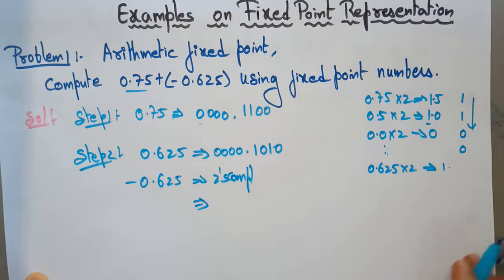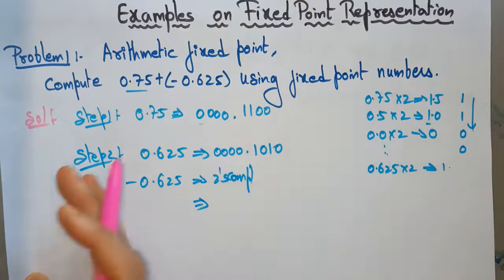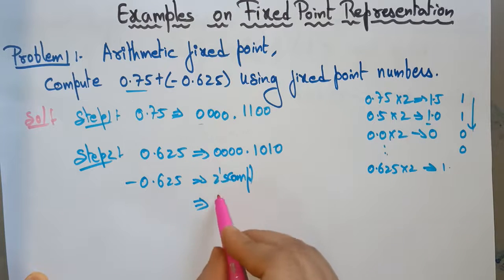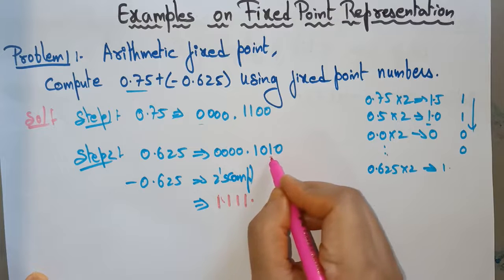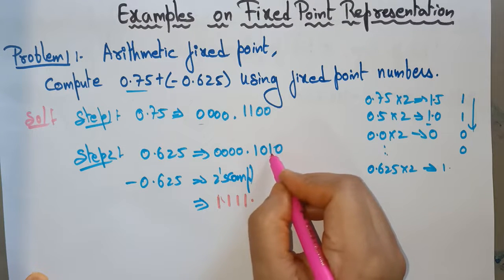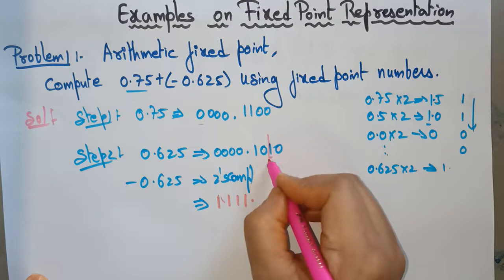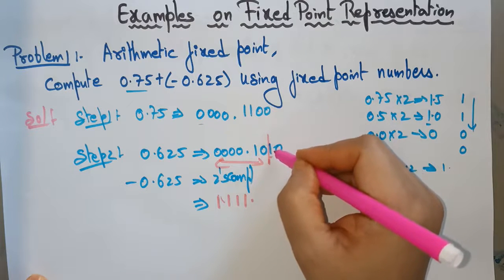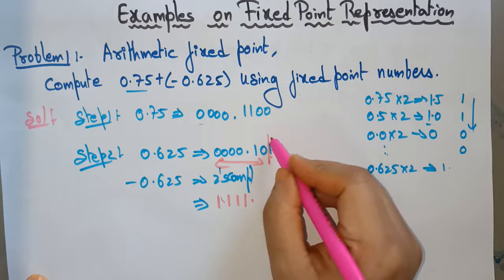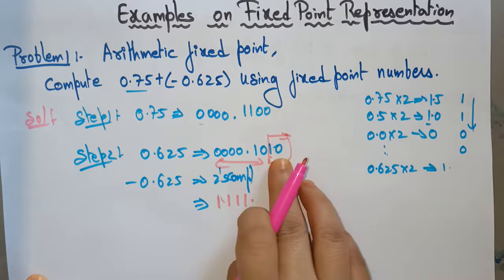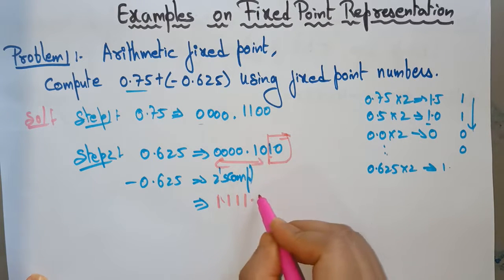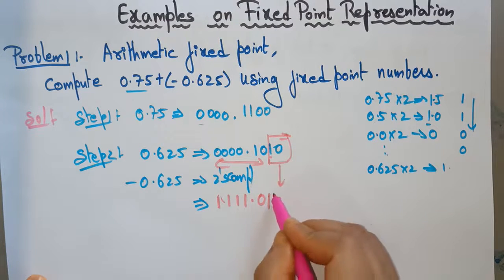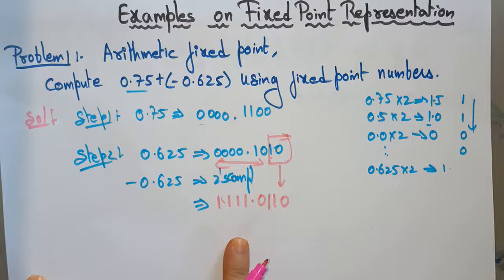To compute the 2's complement: find the least significant 1-bit, keep it and everything to its right unchanged, and complement all bits to the left of it. So from 1111.0110, the result after 2's complement gives us 1111.0110, which represents minus 0.625.